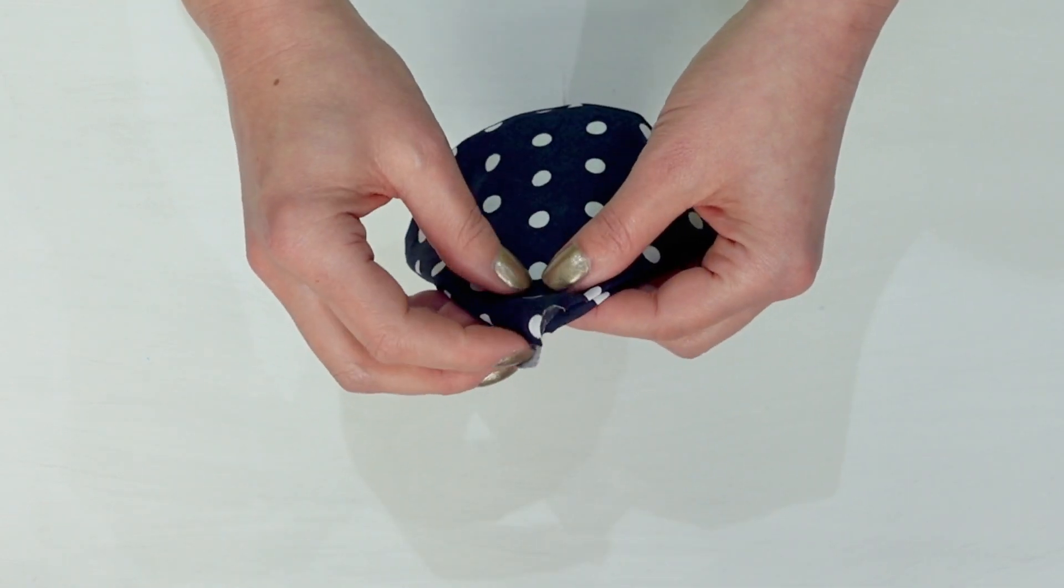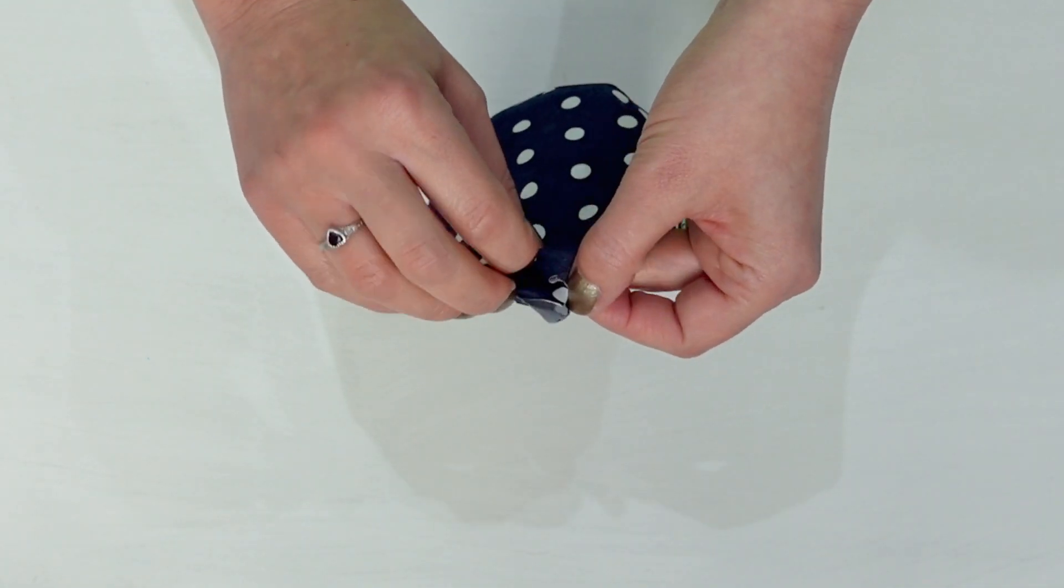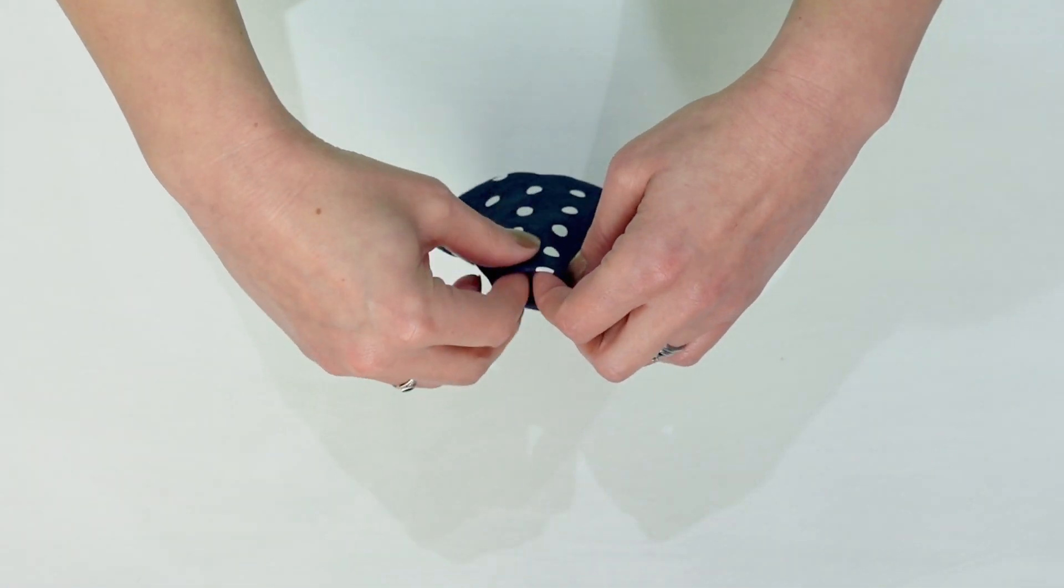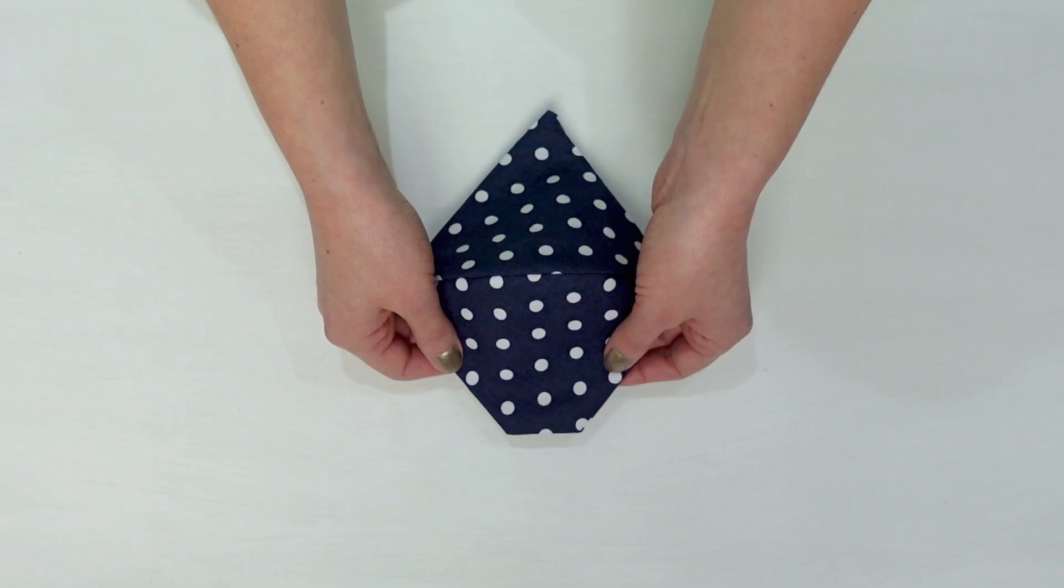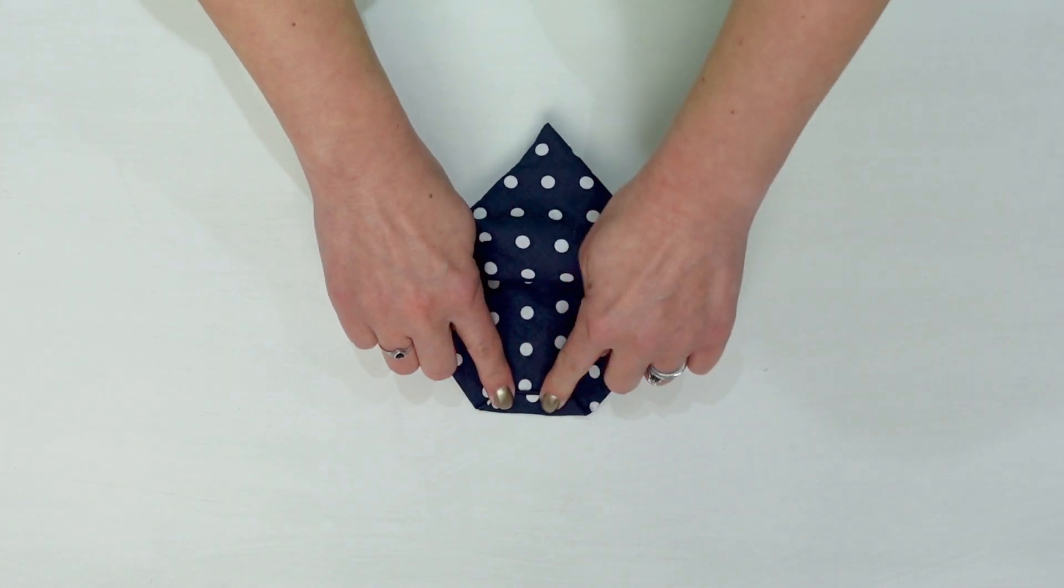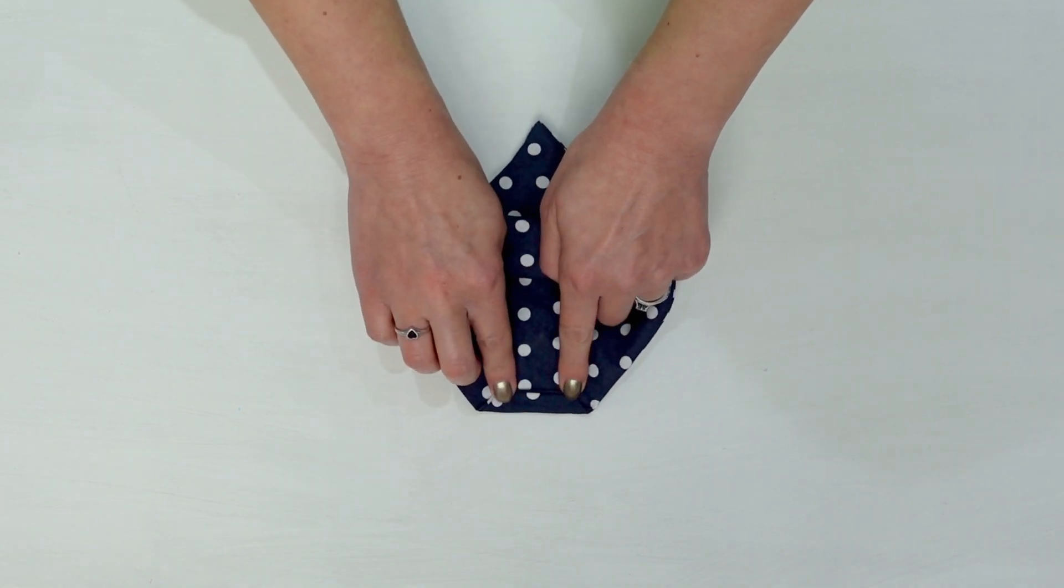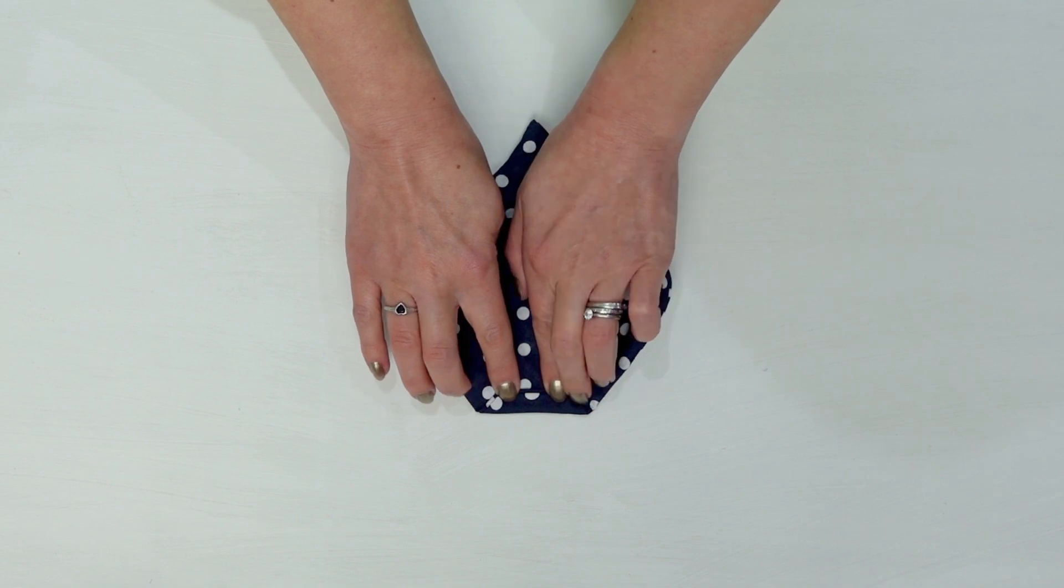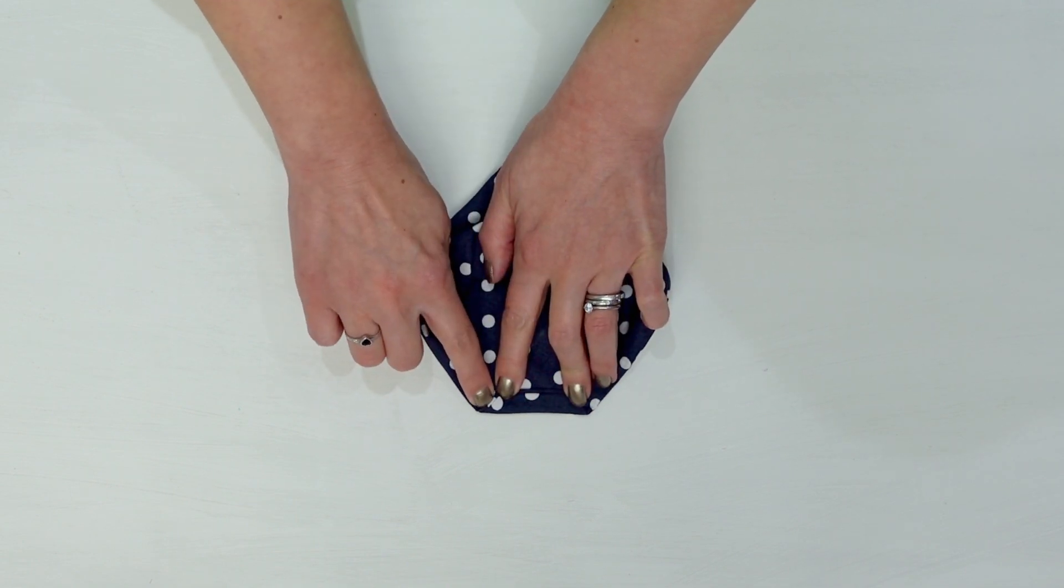Before adding the elastic you need to tuck the corners back inside. Ideally you're trying to create a straight edge. Decide which side of your mask is the inside and then turn that edge towards it creating a fold. You're going to top stitch along that edge securing it in place and leaving room for your elastic.